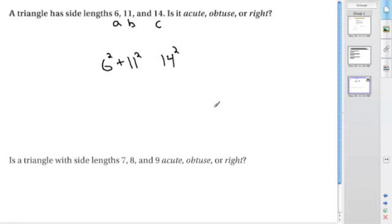36 + 121 equals 157, and 14² equals 196. Since 157 is less than 196, we have an obtuse triangle.